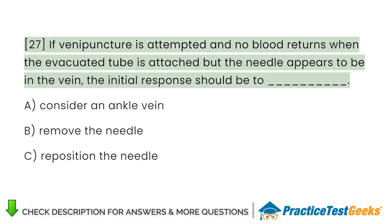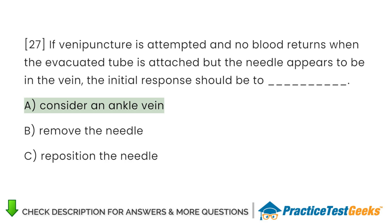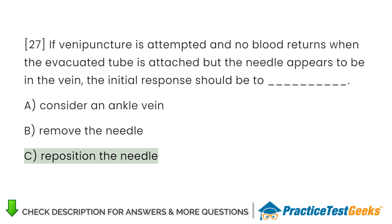If venipuncture is attempted and no blood returns when the evacuated tube is attached but the needle appears to be in the vein, the initial response should be to A. Consider an ankle vein. B. Remove the needle. C. Reposition the needle.